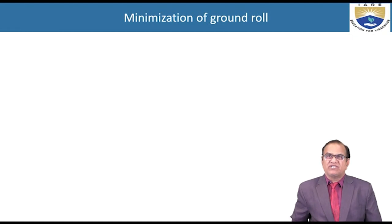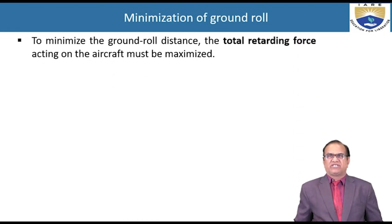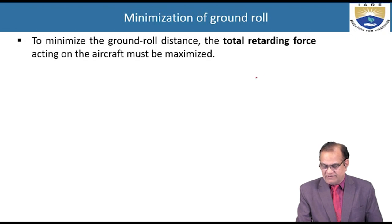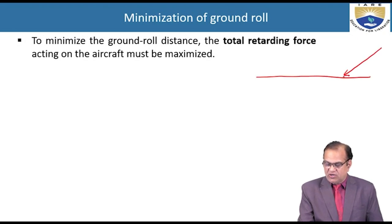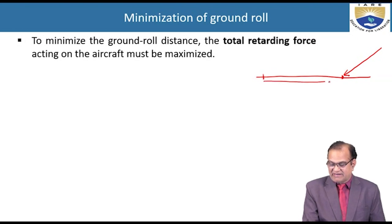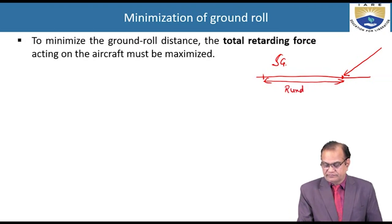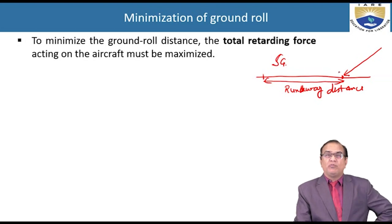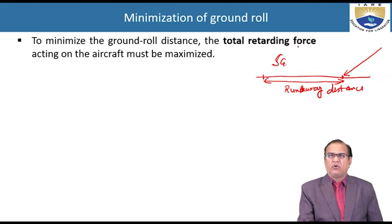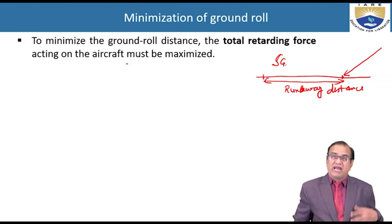Now, minimization of the ground roll: the ground roll is the distance from touchdown to coming to zero velocity, called Rg. To minimize this ground roll distance Sg, the total retarding force acting on the aircraft must be maximized. The braking forces must be maximized while ensuring the aircraft does not get damaged.